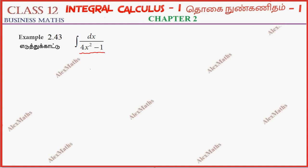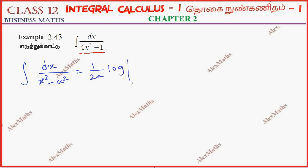We recall the basic formula: integration of dx by x squared minus a squared equals 1 by 2a log mod x minus a by x plus a, plus c.